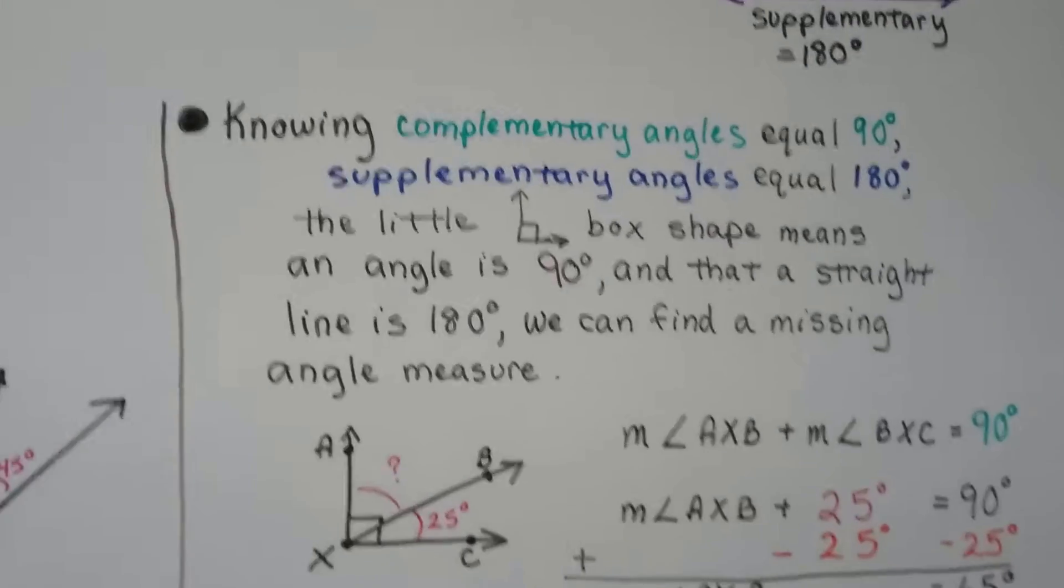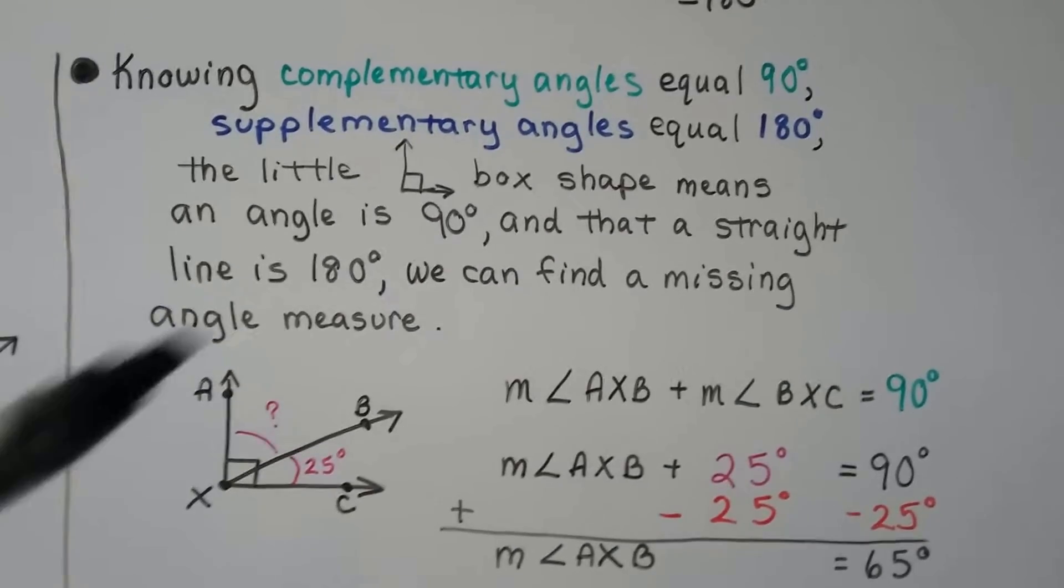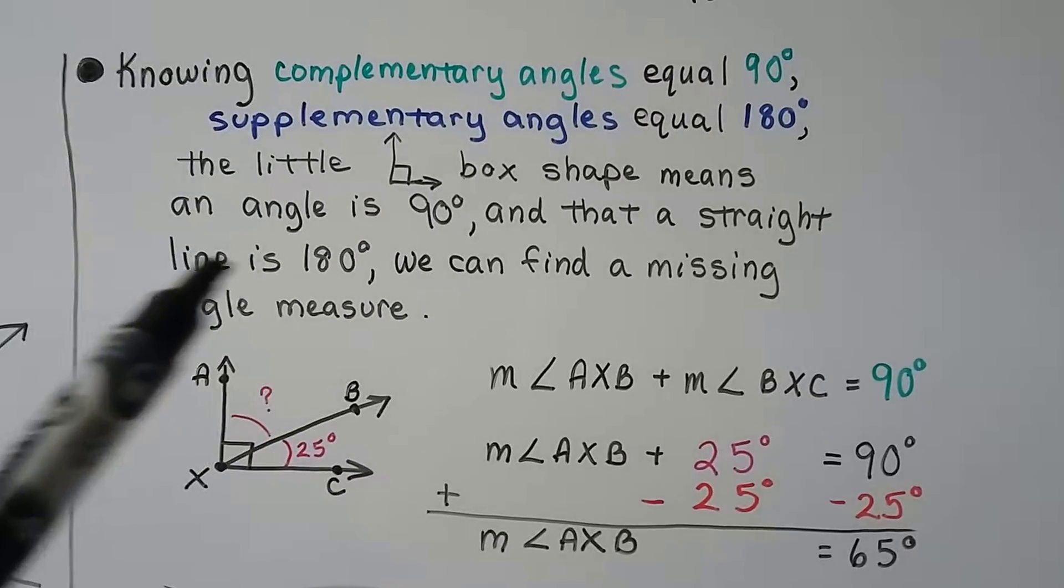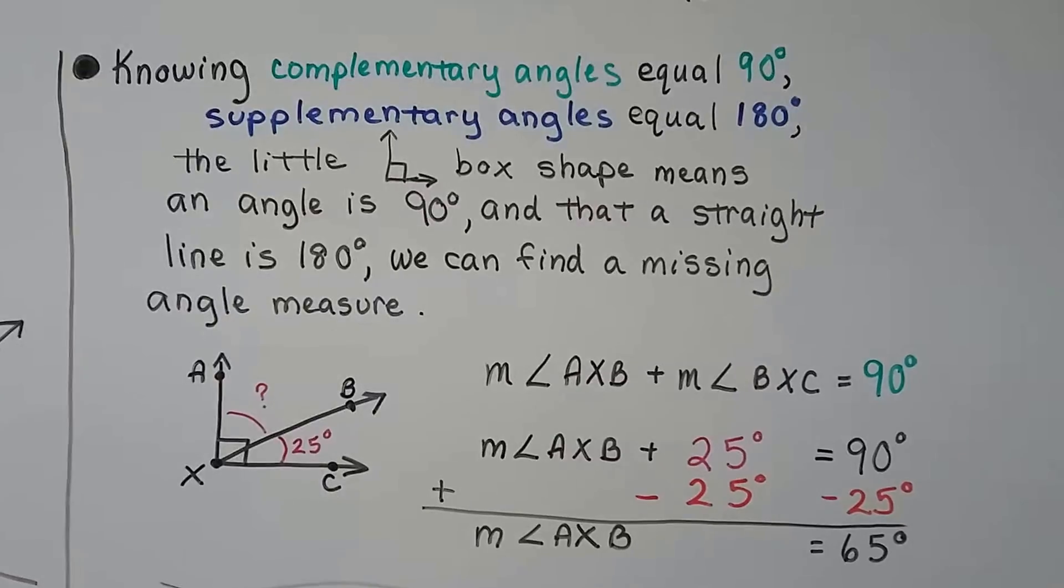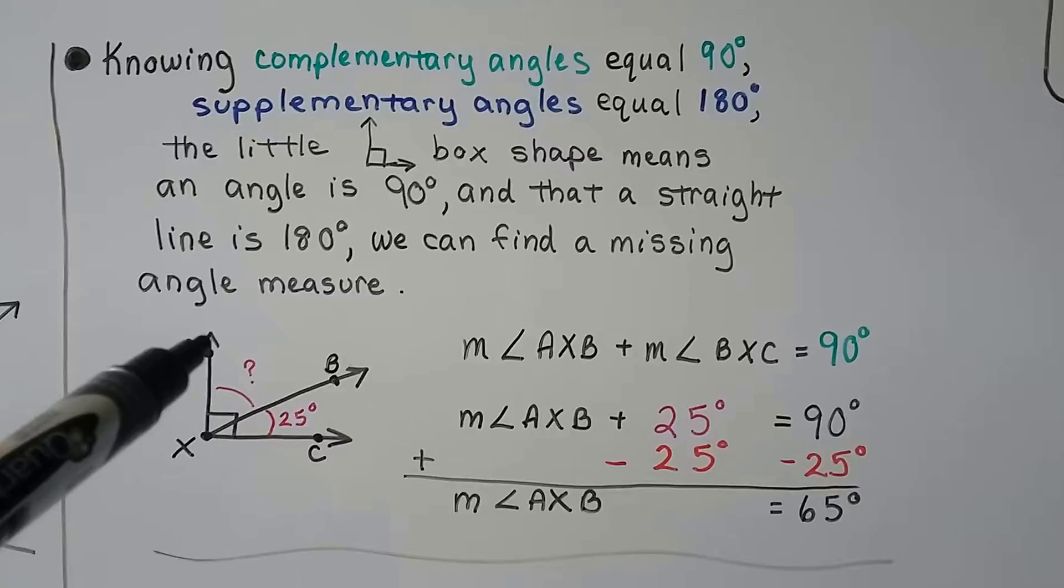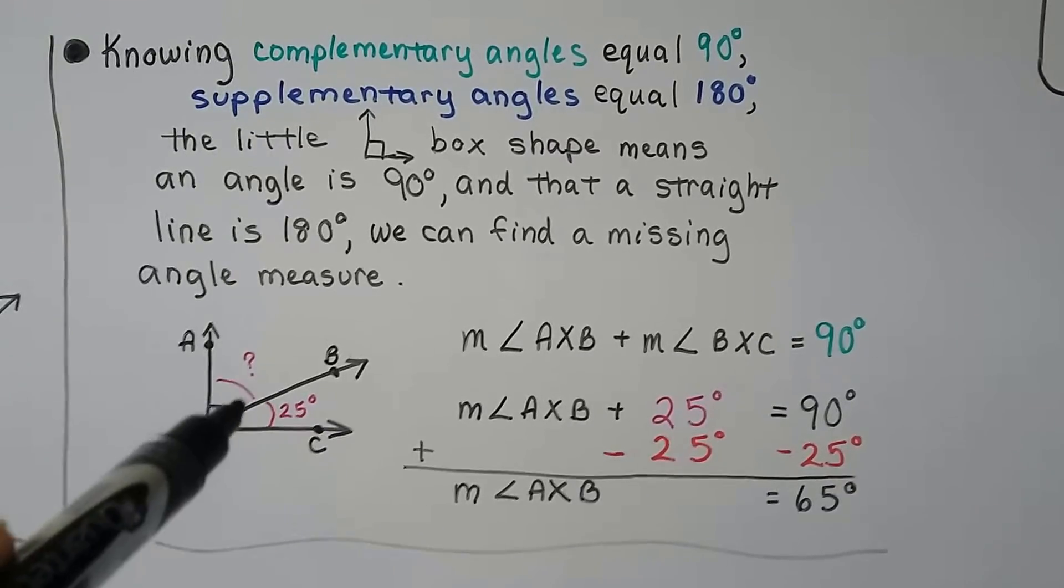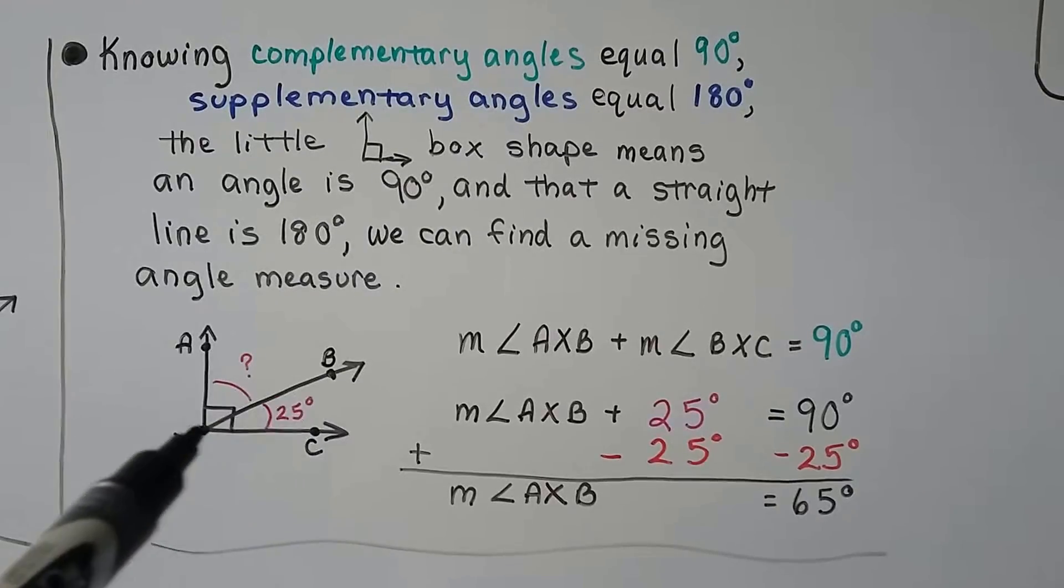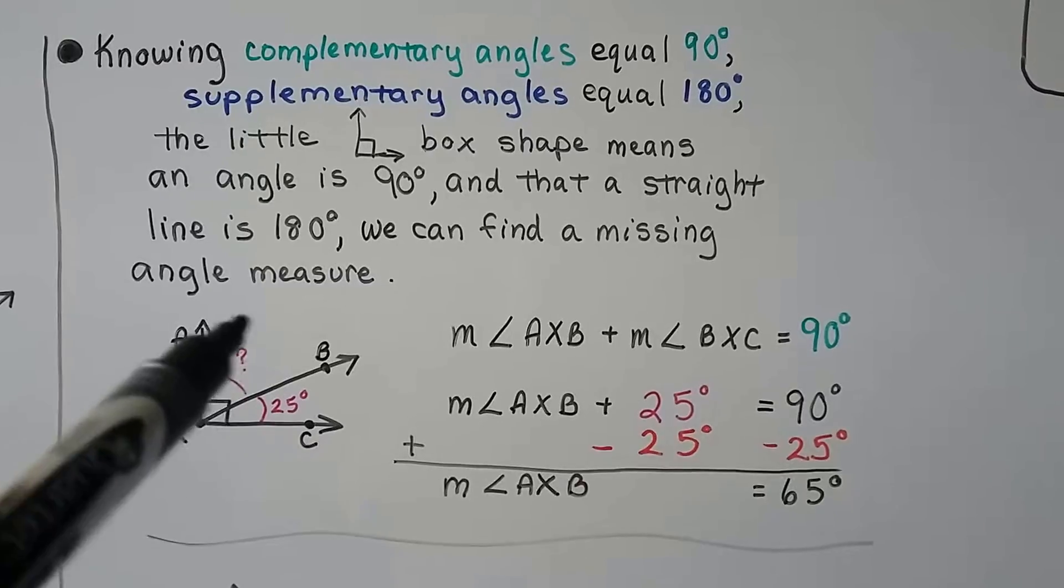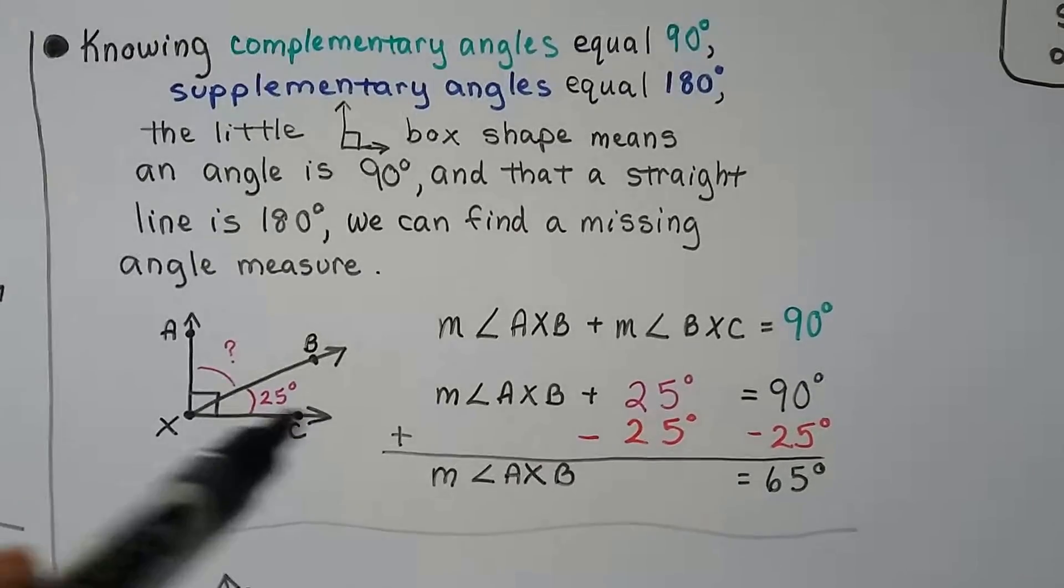Knowing complementary angles equal 90 degrees and supplementary angles equal 180 degrees, and knowing that that little box means it's a right angle, it's 90 degrees, and knowing that a straight line is 180 degrees, we can find missing angle measures. We look at this. This is angle A, X, C. And it's a right angle. We see the box there. And it's telling us that angle B, X, C is 25 degrees. But it doesn't know what angle A, X, B is.